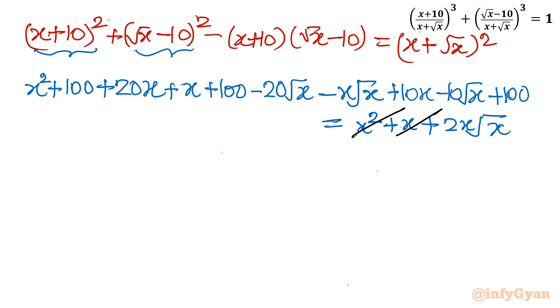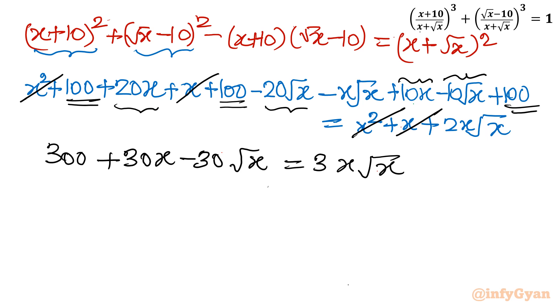Now cancel whatever you can. x² + x will be over. How many hundreds are there? Three hundreds, so I will write 300. Now 20x and 10x, so 30x. Root x terms: -20√x and -10√x, so -30√x. Anything else? Yes, -x√x I will take to the right, it will become 3x√x.